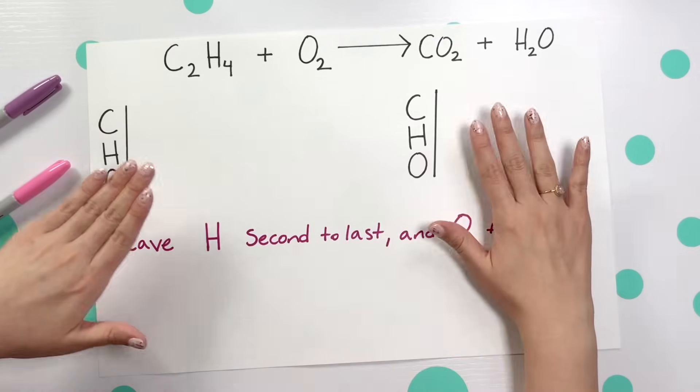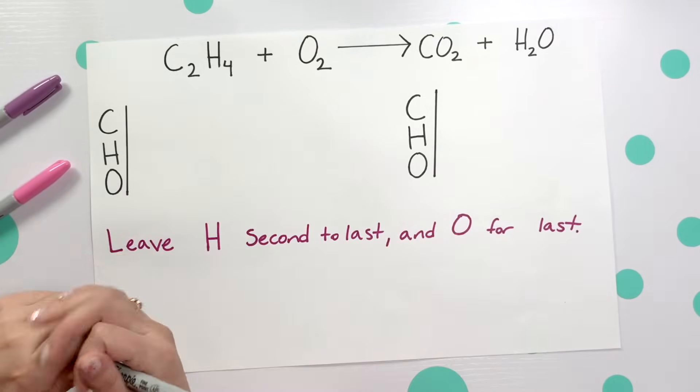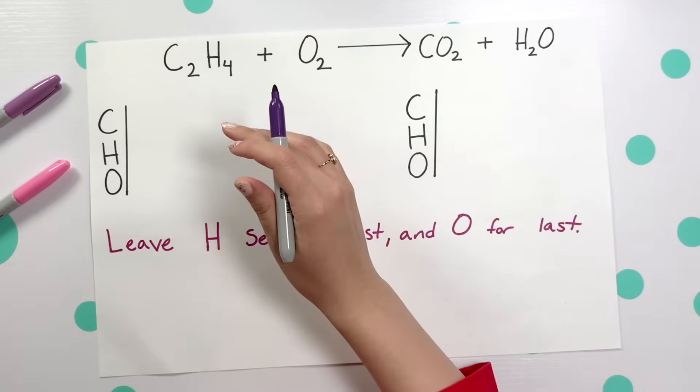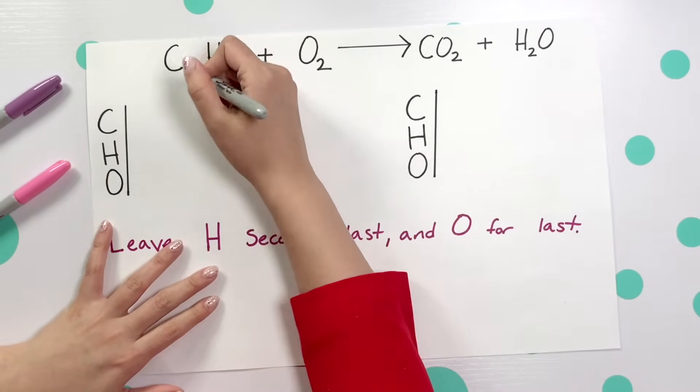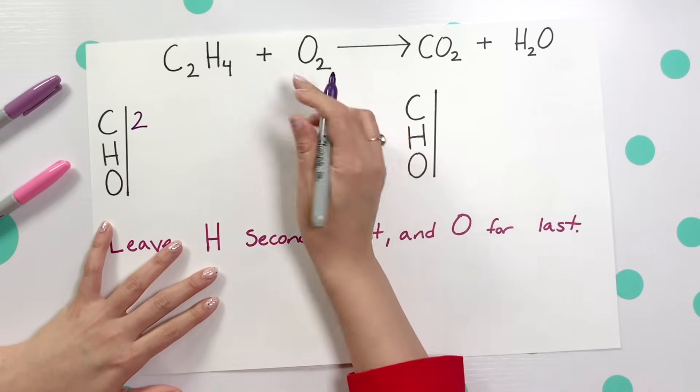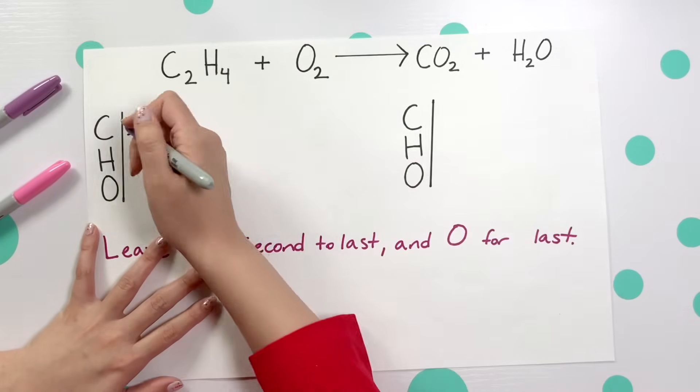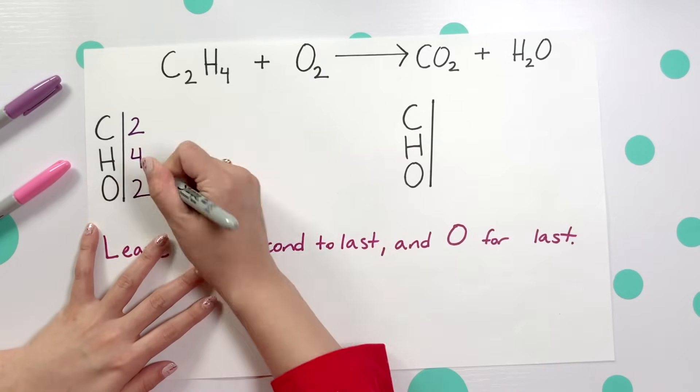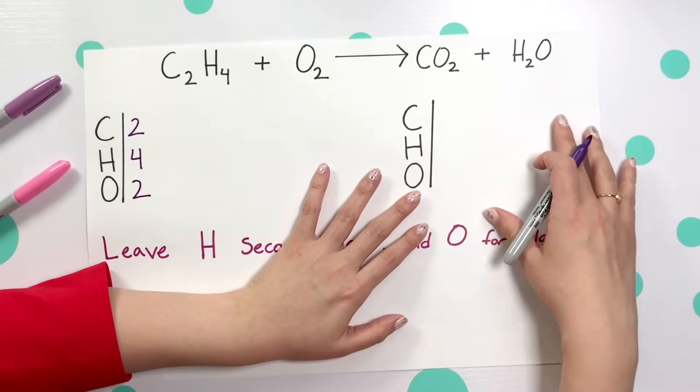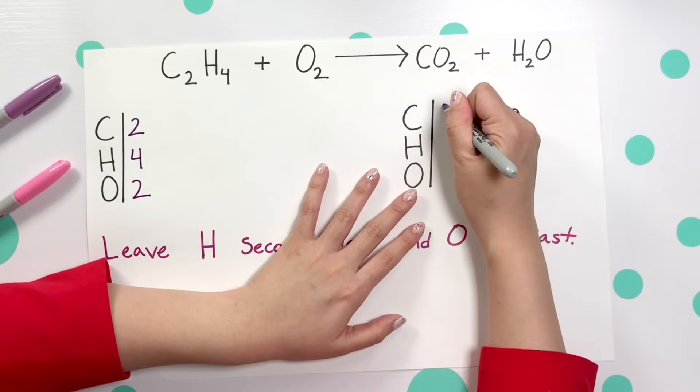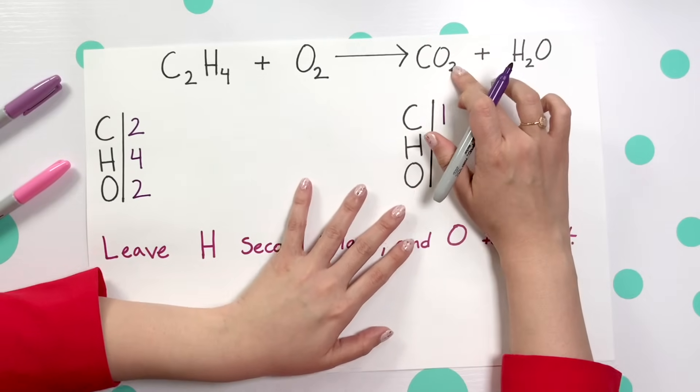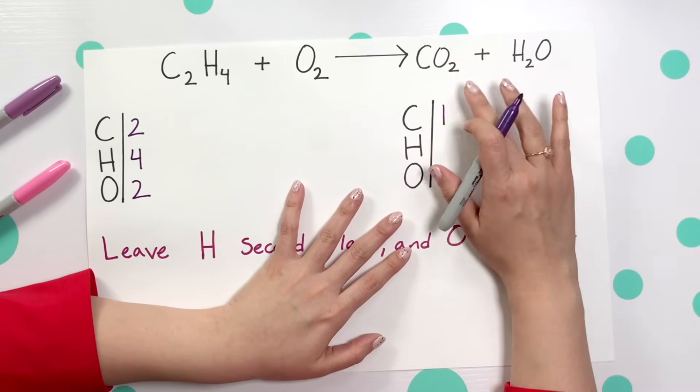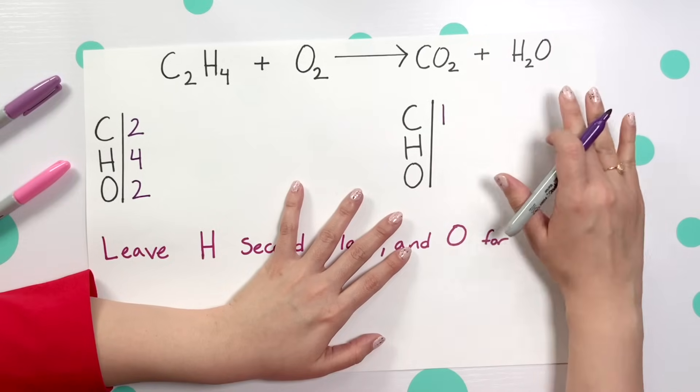Now looking at this I'm just going to count how many of each element we have. Looking at this subscript we have two carbon on our reactant side. Looking at the four subscript we have four hydrogen and two oxygen. Now looking on our product side we'll see there's only one carbon.